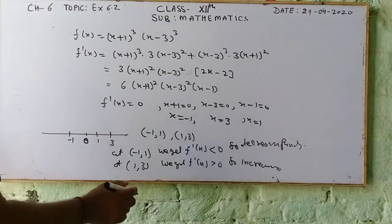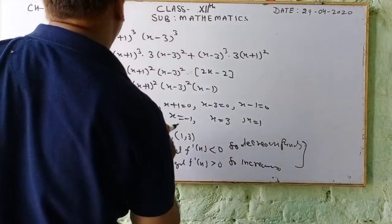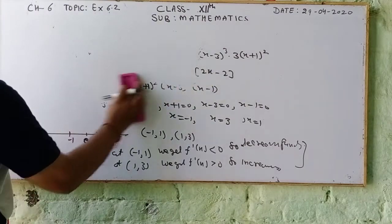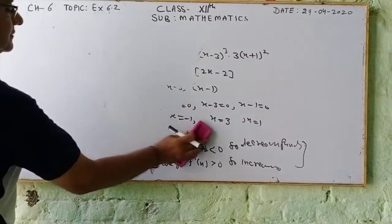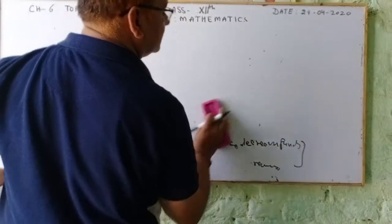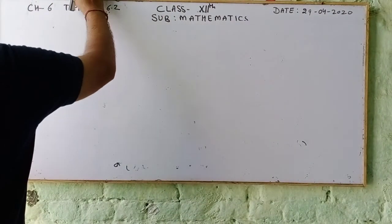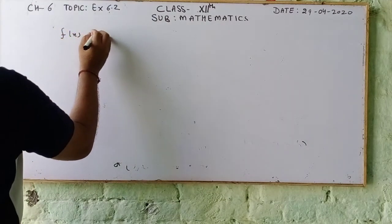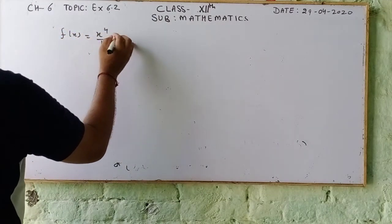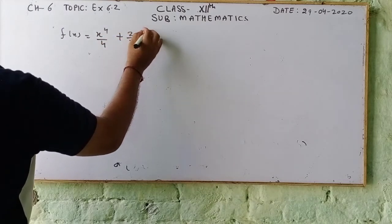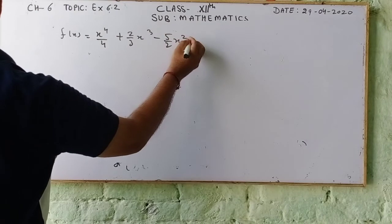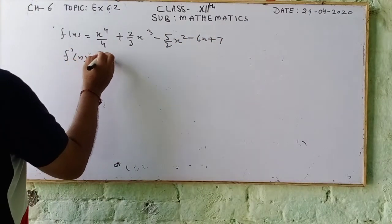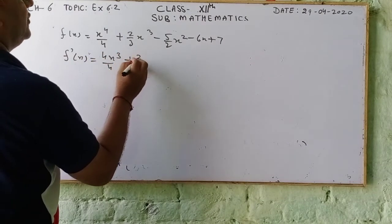This is the required solution for Question 1. Now we take another question: f(x) = x⁴/4 minus (2/3)x³ minus (5/2)x² minus 6x plus 7. We find f'(x): differentiating term by term gives (4/4)x³ minus (3·2/3)x² minus (5/2·2)x minus 6.